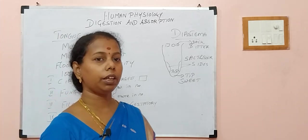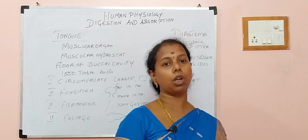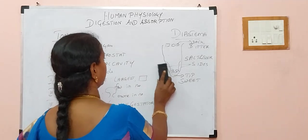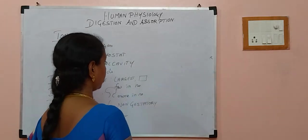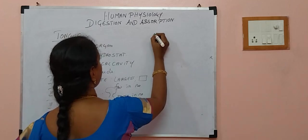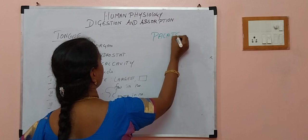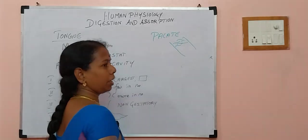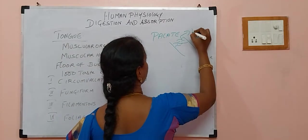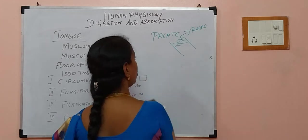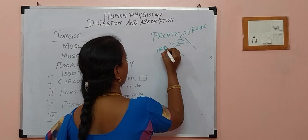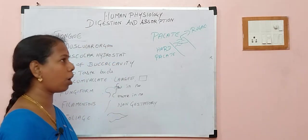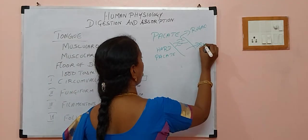Now, touch your tongue against your upper jaw — can you feel a bone there? Yes, it is the palate. At the front you can feel roughness because of variations called rugae. When rugae are present, it is called the hard palate. At the back there are no rugae — it is very soft, and that is called the soft palate.